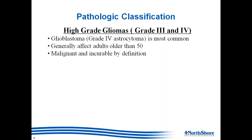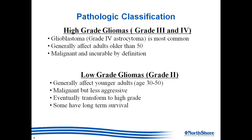High-grade tumors are highly malignant. Low-grade gliomas — typically grade two — affect younger people, roughly age 30 to 50. They are malignant but less aggressive. It's important to know these are still malignant tumors that will eventually transform into high-grade tumors in most cases, though some patients — especially oligodendroglioma patients — can have very long-term survival.